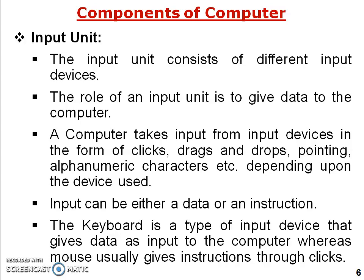The input unit consists of different input devices such as mouse, keyboard, and light pen. The role of the input unit is to give data to the computer. The input device mainly provides data; the computer takes input in the form of clicks, drags, drops, pointing, and alphanumeric characters — all of these are forms of data. Input can be either data or an instruction. The keyboard is a type of input device that gives data and instruction to the computer, whereas the mouse gives instructions in the form of clicks.